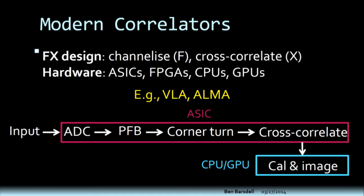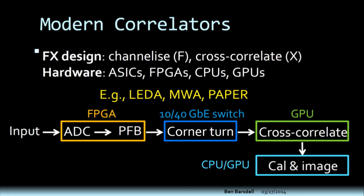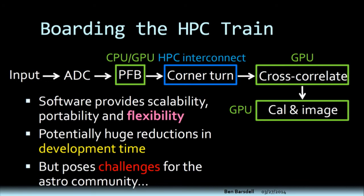For example, the Very Large Array and the ALMA use an ASIC design mostly, with calibration and imaging typically done on CPU servers. The Submillimeter Array uses an all-FPGA design for both the F and X stages. Some of the more recent installations — the LEDA project I work on, MWA, and the PAPER project — use a hybrid design with an FPGA F-engine, then just an Ethernet switch and a GPU-based correlator.